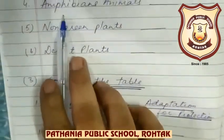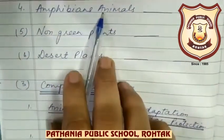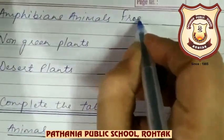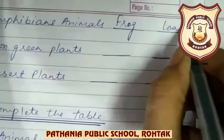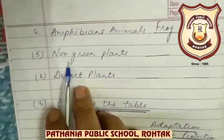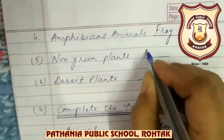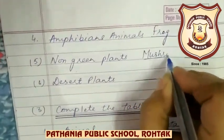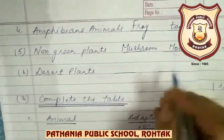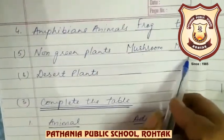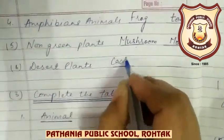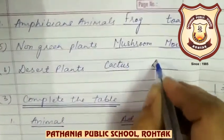Amphibian animals — the animals that live on both land and water. So you can write here: Frog and Toad. Non-green plants — the plants that cannot make their own food and depend upon dead and decaying material — that is Mushroom and Mold. Desert plants — plants that live in desert areas: Cactus and Date Palm.